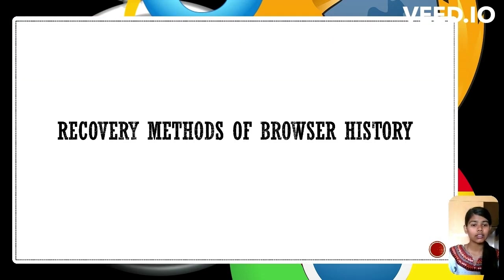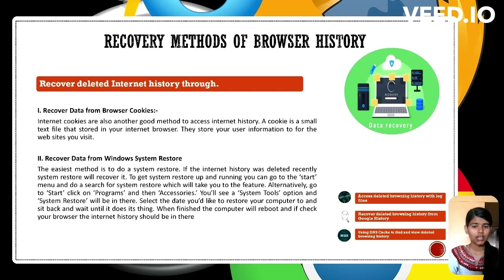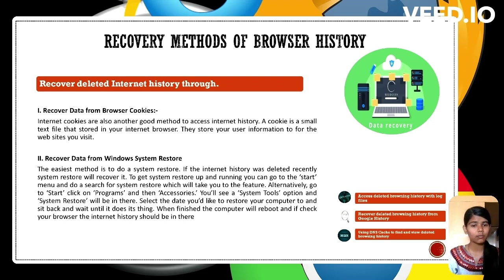There are four methods for recovery of browsing history. The first is recovering deleted internet history through browser cookies — small text files stored by browsers containing user information and website visit data. The second method uses Windows System Restore, a feature that can restore recently deleted internet history by reverting the system to a previous state. It is accessed via the Start menu under System Tools; after restoration, the computer reboots and the browser history should be available.